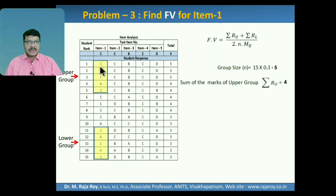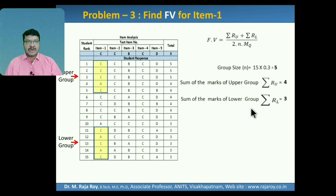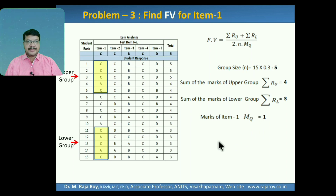Sum of the marks in the upper group: upper group means top 5 students. Among these 5 students, the correct answer is C. Correct answers count to 4, so Sigma RU equals 4. Sum of the marks in the lower group: correct answer is C, and in the bottom group correct answers are 3, so Sigma RL equals 3. Marks allocated to each question is 1. FV equals Sigma RU (4) plus Sigma RL (3) divided by 2 into N (5) into MQ (1), giving a value of 0.7.